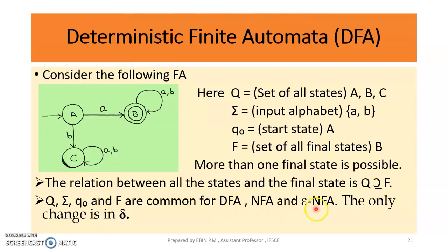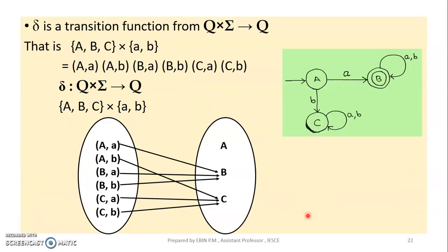Here we have a difference. Delta is a transition function, and this is where DFA, NFA, and epsilon NFA differ. For DFA, the transition function delta maps Q cross sigma to Q — that is, Q × Σ gives Q.